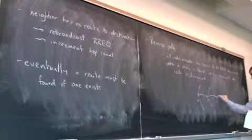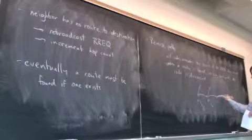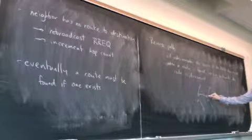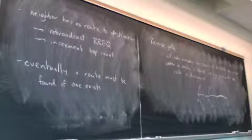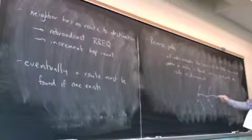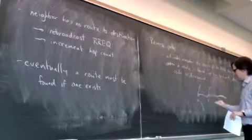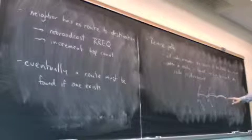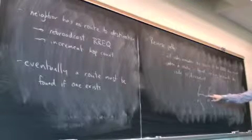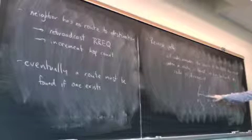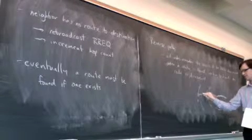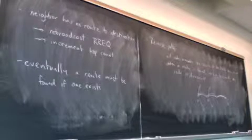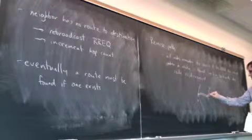So this is the route. So when C receives the route request, C remembers that it received the route request from B. And it sends a message back saying, I have a route. B knows that, or B receiving this message, knows that it received that message from A and just passes it back along. So at this point, we now have a route from A, B, C.